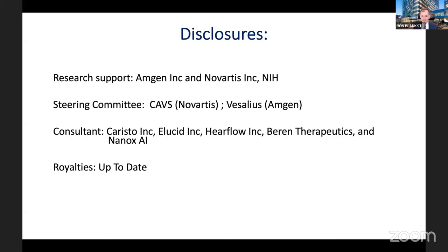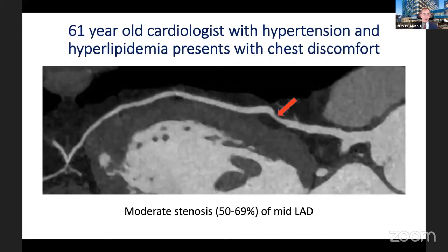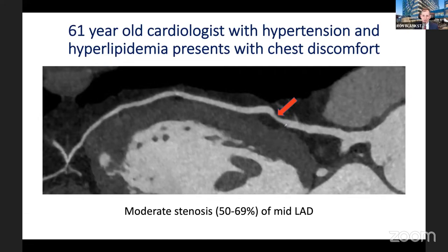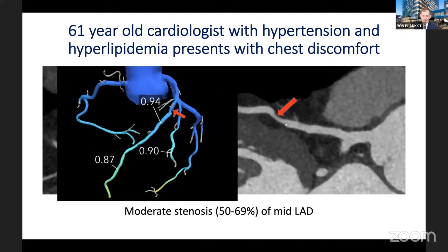I will start with two cases. The first is a 61-year-old cardiologist with hypertension and hyperlipidemia who had atypical chest discomfort and requested a coronary CT angiogram. In the mid-LAD, there was a moderate stenosis of 50 to 69 percent. FFR-CT, which uses 3D CT data to estimate invasive FFR, yielded 0.94, indicating this is unlikely to be a flow-limiting lesion.